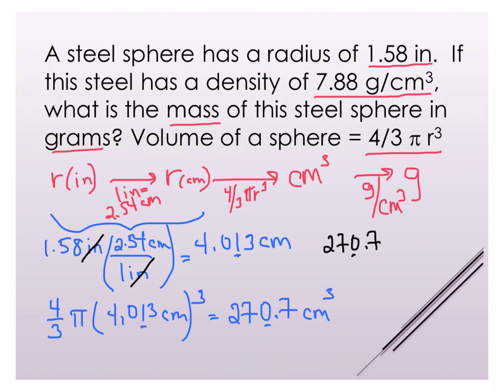I know I need centimeters cubed on the bottom, that means I'm going to have 7.88 grams on top. Now my centimeters cubed will cancel. Now I can solve this and find that 270.7 times 7.88 equals